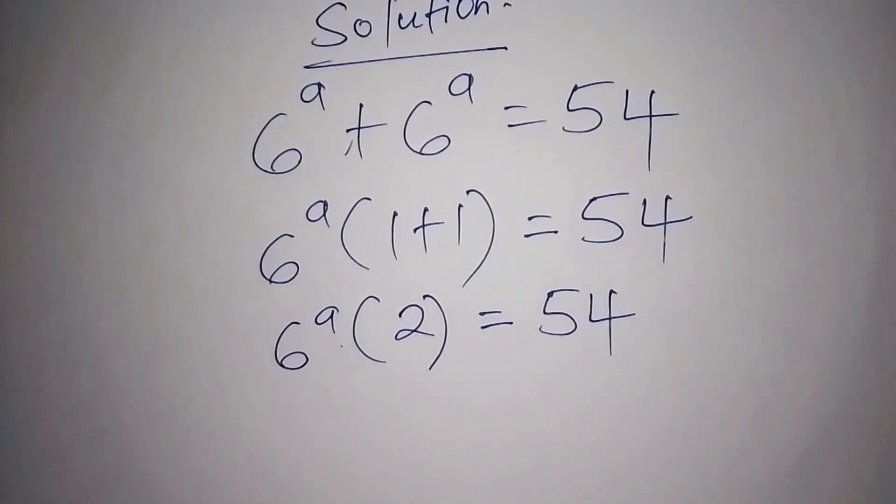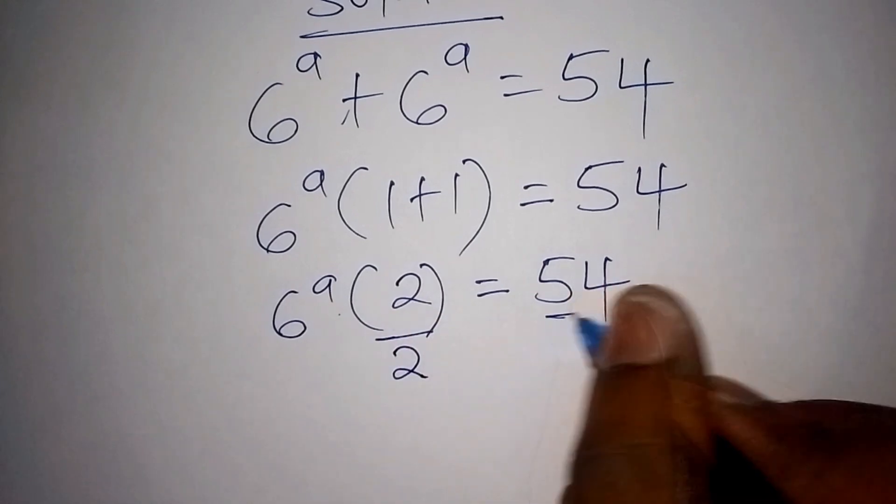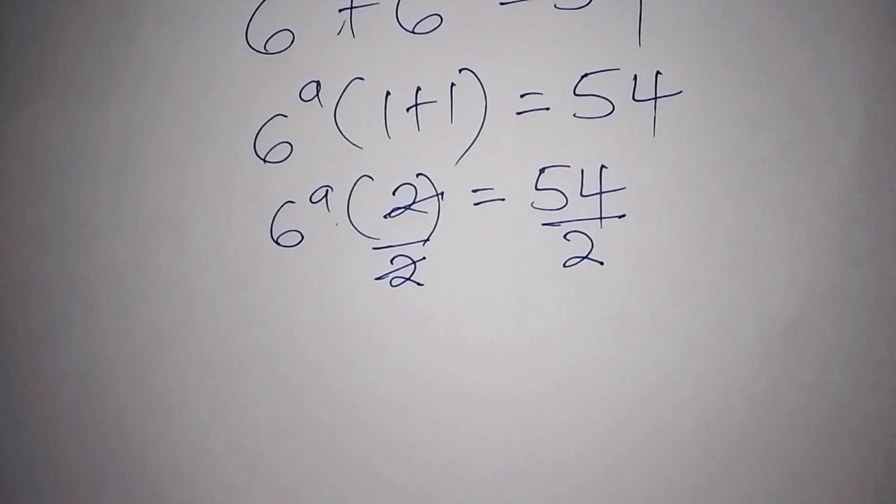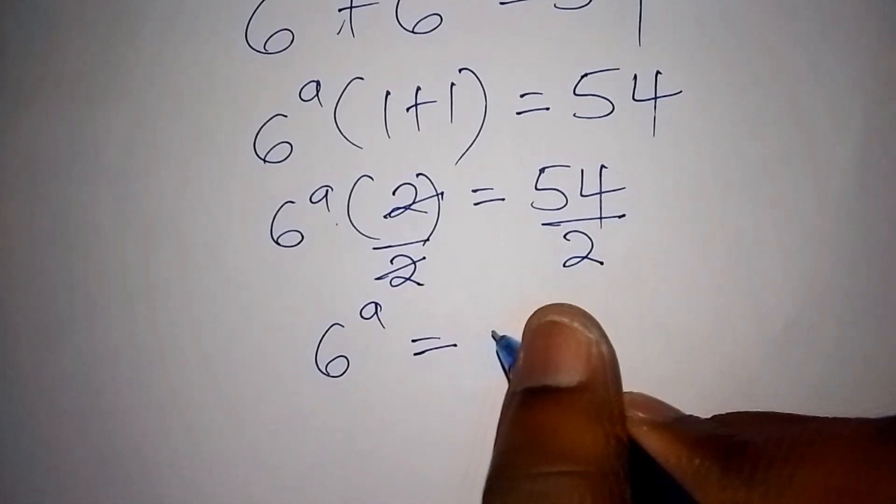So the next step is to divide both sides by 2. Then this side also shall divide by 2. So 2 by 2 shall cancel. Now we shall say that 6 to the power of a equals 27.